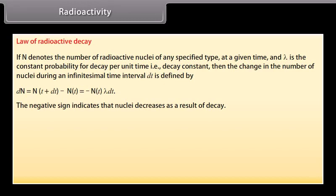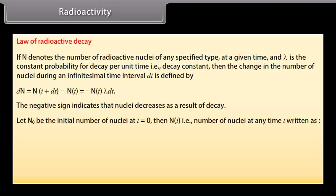The negative sign indicates that nuclei decreases as a result of decay. Let N₀ be the initial number of nuclei at T is equal to 0. Then N(T), that is number of nuclei at any time T, is written as N(T) is equal to N₀ into e raised to the power minus λT.